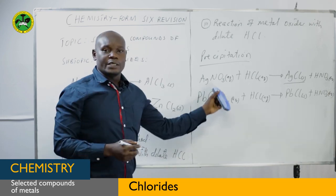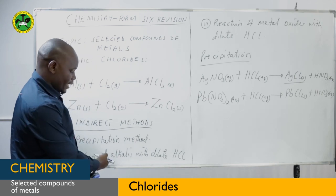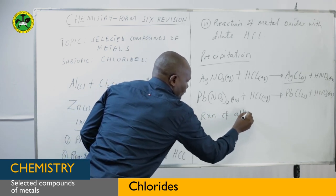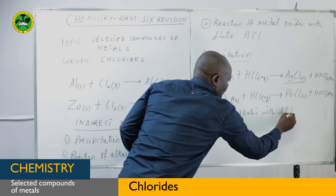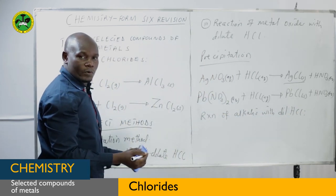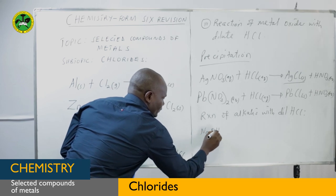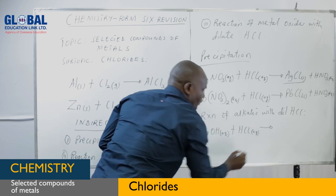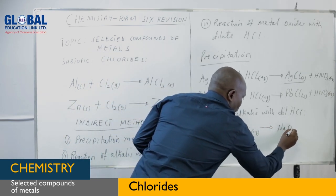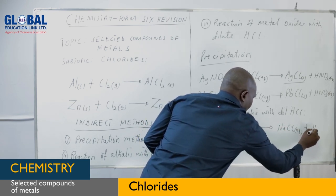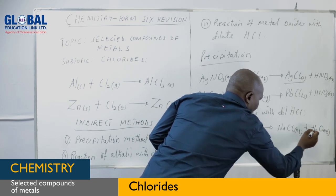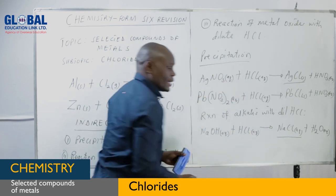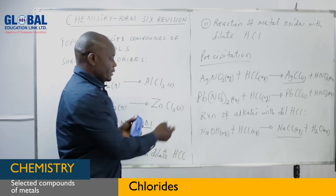We also have the reaction of alkalis with diluted hydrochloric acid. Taking an example of a very common alkali, which is sodium hydroxide — when sodium hydroxide is treated with diluted hydrochloric acid, you get a soluble chloride which is sodium chloride, and it is a kind of neutralization reaction. This is the product of alkali reacting with hydrochloric acid.